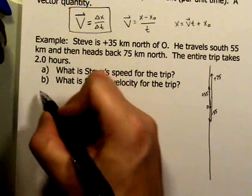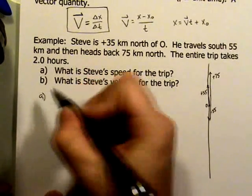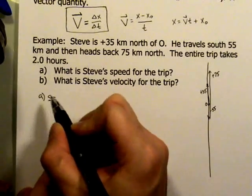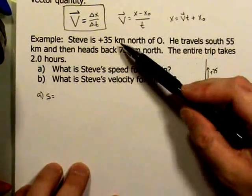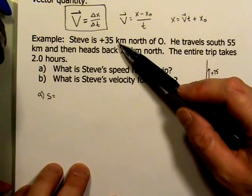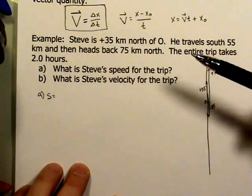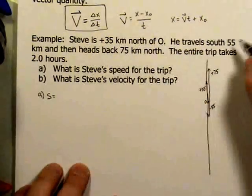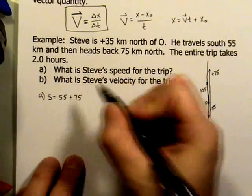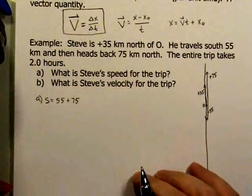So let's start with speed. So for speed, we're going to need to know S, the distance. And in this case, the 35 is irrelevant because that's his initial displacement. What we want to know is when they started moving, how far did they move? So he traveled 55 to the south, 75 to the north. And really important that you remember, these are always positive distances. Distance is always positive.